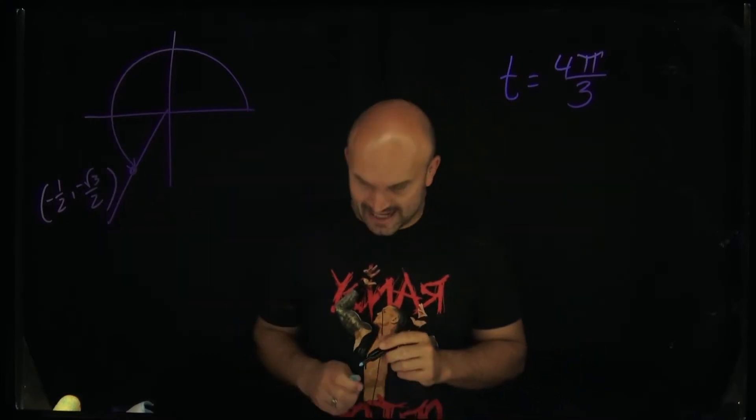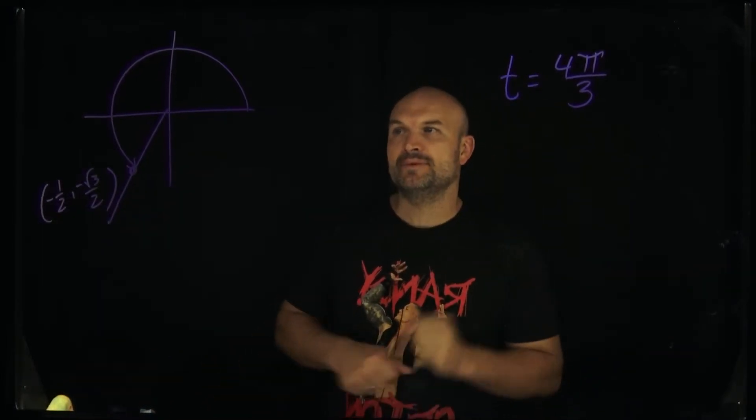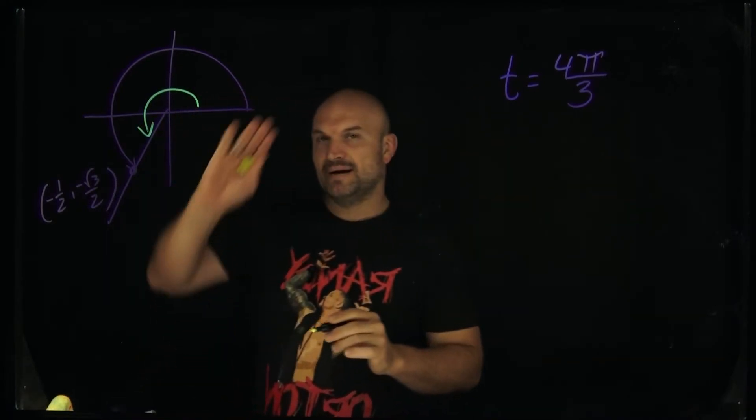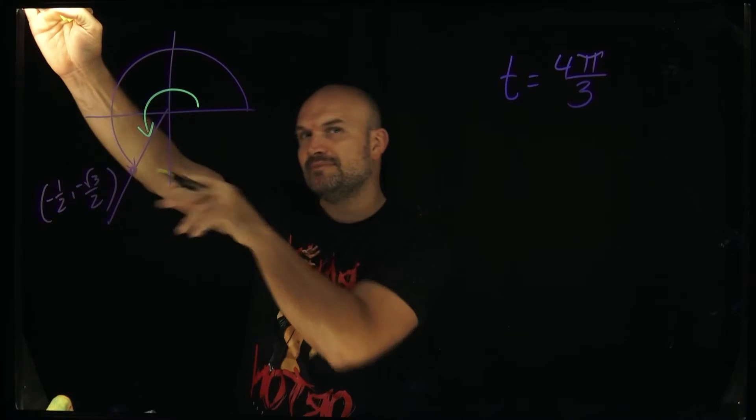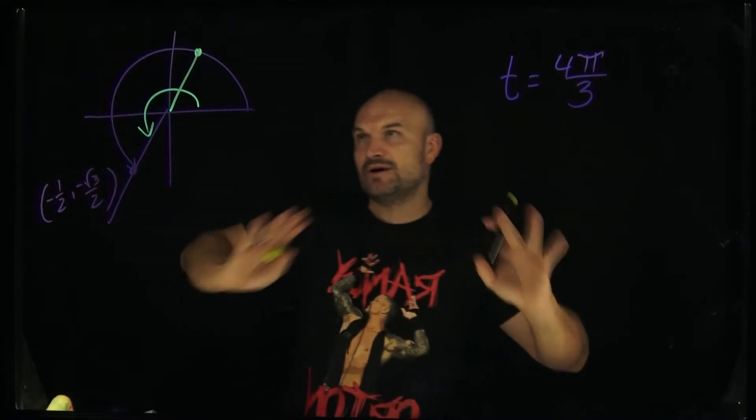So there's a couple things that I want you to understand that I was able to do rather quickly in my head because I know the unit circle. First of all, where this angle is was just by graphing it in standard form. But by knowing the unit circle, I didn't actually memorize this point. What I memorized was this point right up here.